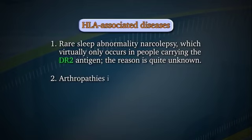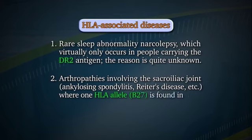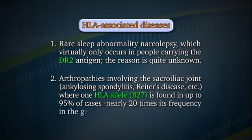Arthropathies involving the sacroiliac joint — such as ankylosing spondylitis and Reiter's disease — show HLA-B27 found in up to 95% of cases, nearly 20 times its frequency in the general population. Numerous other diseases, including almost all autoimmune diseases, show a statistically significant association with particular HLA antigens or groups of antigens.